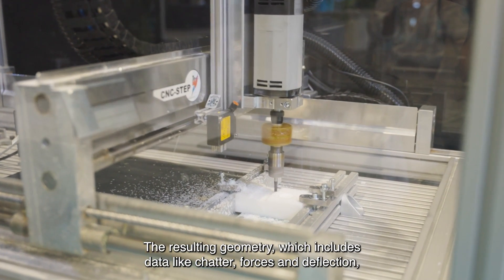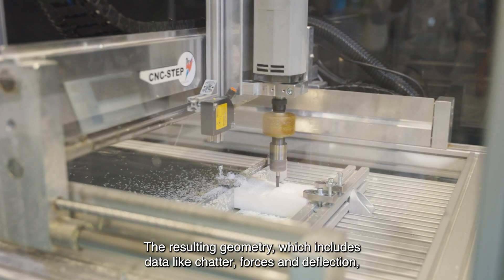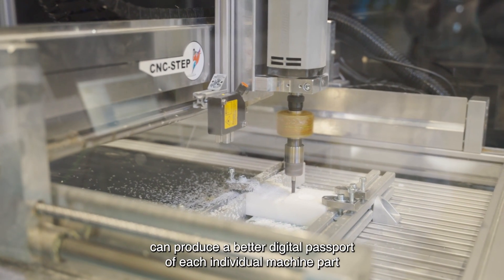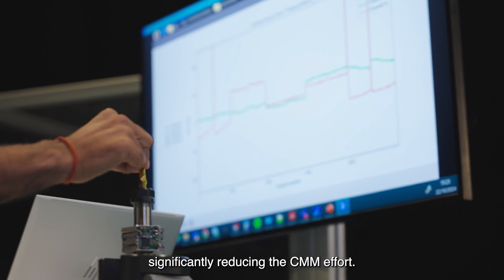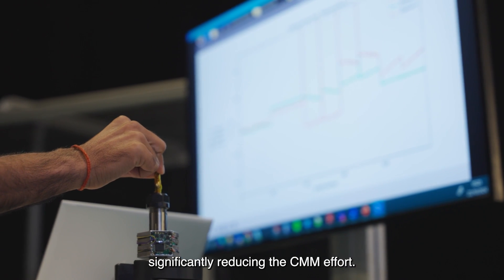The resulting geometry, which includes data like chatter, forces and deflection, can produce a better digital passport of each individual machine part, significantly reducing the CMM effort.